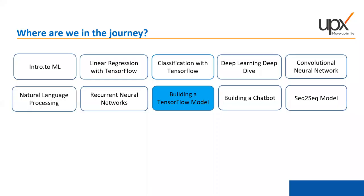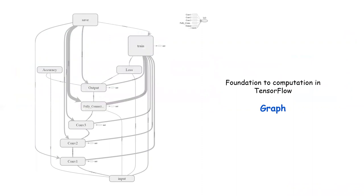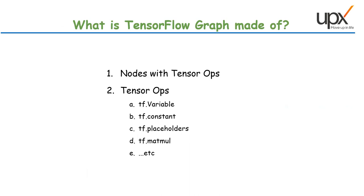Here is where we are in the journey — building and deploying TensorFlow models. Let's see what a TensorFlow model really contains. The foundation of computation in TensorFlow is a graph — a collection of nodes which are operations, linked together so results pass from one node to another. The TensorFlow graph is made of nodes corresponding to tensor operations: variables, constants, placeholders, math functions, etc.